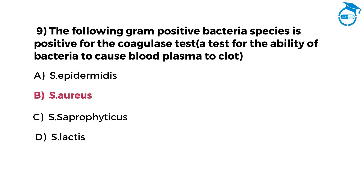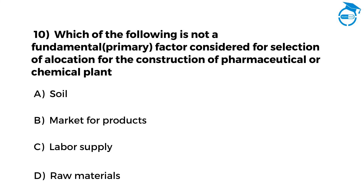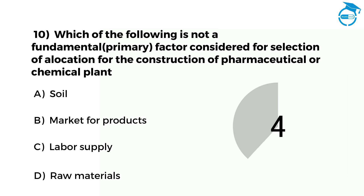Here is the last one. Give it a try. Which of the following is NOT a fundamental factor considered for selection of a location for the construction of a pharmaceutical or chemical plant? Option A soil, option B market for products, option C labor supply, option D raw materials. Your time starts now. Post your answer in comments. The right option is A, that is soil.